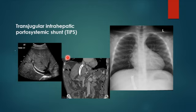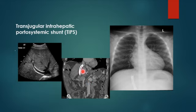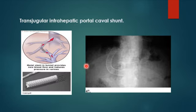TIPS — transjugular intrahepatic portosystemic shunt — consists of two radiopaque lines creating a direct communication between the hepatic vein and branches of the portal vein, bypassing the liver. It is used as a treatment for portal hypertension. You will always see it in a cirrhotic liver with portal hypertension. On X-ray and CT the stent is visible extending from the portal vein into the hepatic vein toward the vena cava.